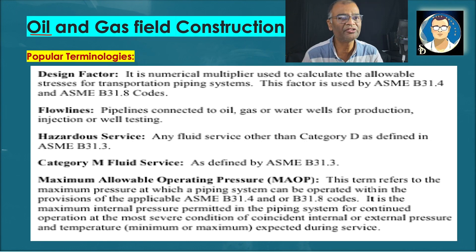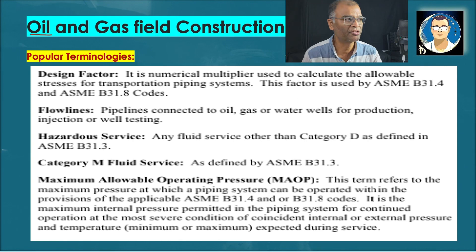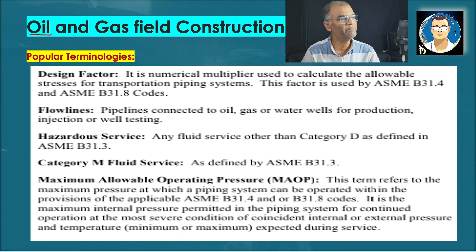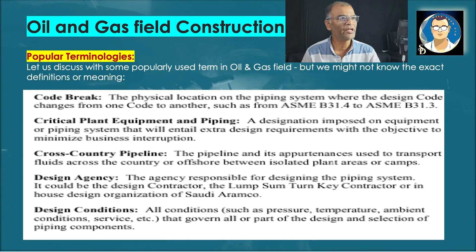Maximum Allowable Operating Pressure, or MAOP, is a term very widely used in hydrotest field. We always check the MAOP of the line in comparison with the hydrotest pressure. In short, MAOP is the maximum operating pressure of the line, based on which the designer does all calculations to determine pipe diameter, pipe thickness, and pipe material.